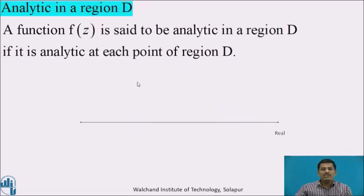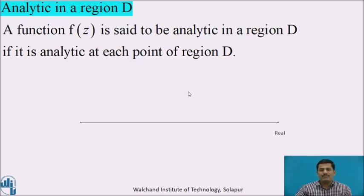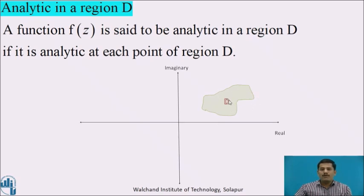Next, analytic in a region d. A function f of z is said to be analytic in a domain d if it is analytic at each point of the region d. This is a complex plane, and suppose this is the given region d in which the function is defined. A function f of z is said to be analytic in this region if it is analytic at each and every point of this region.